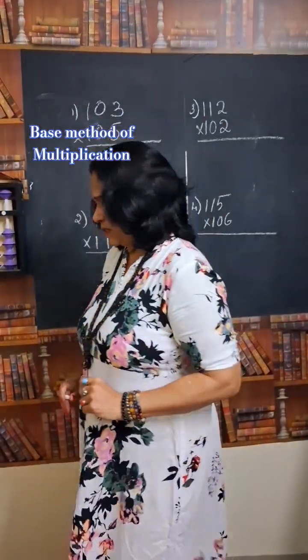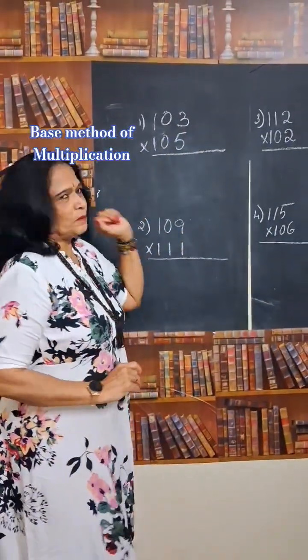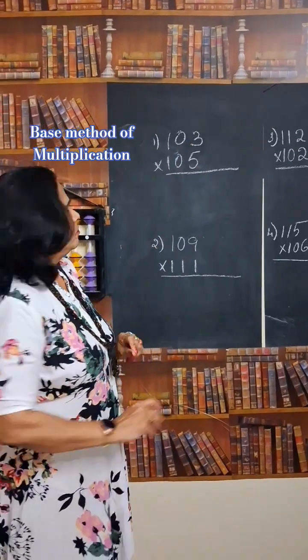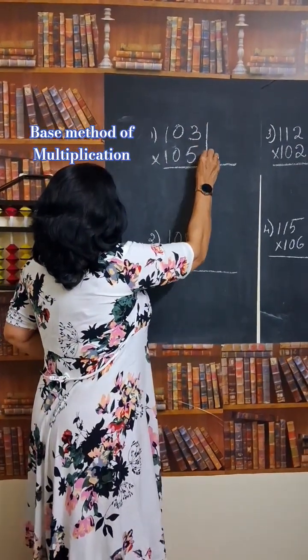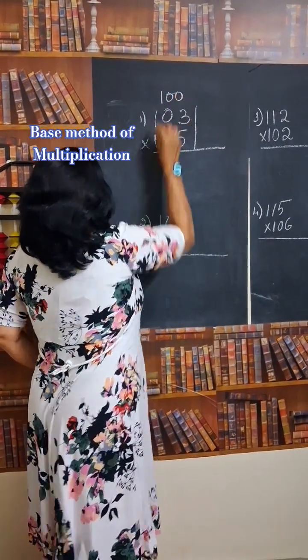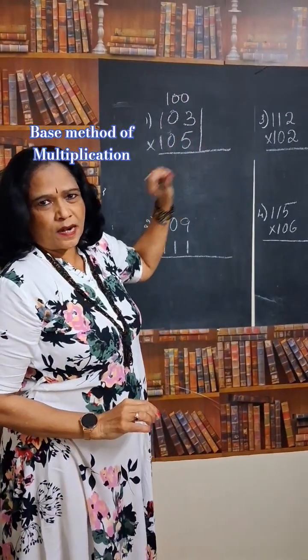3 digit into 3 digit. See the number. Now, 103 multiplied by 105. It is very easy. First we should see what is the base of the number. Base of the number is 100. That means it is very near to 100.